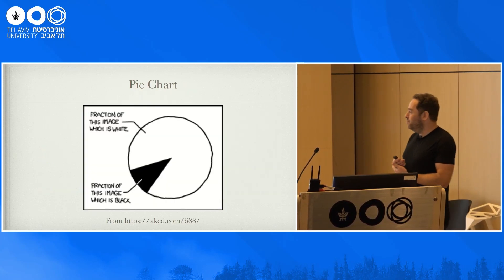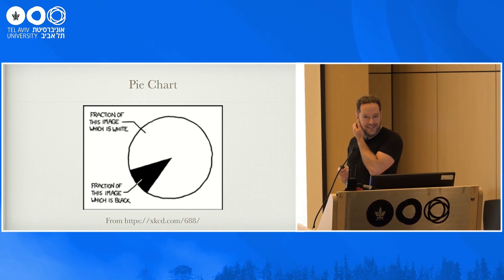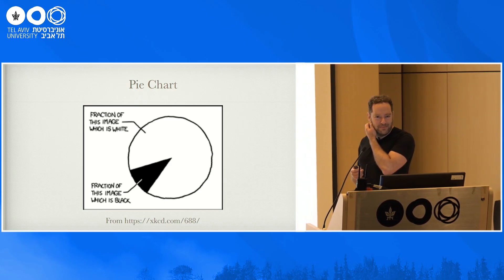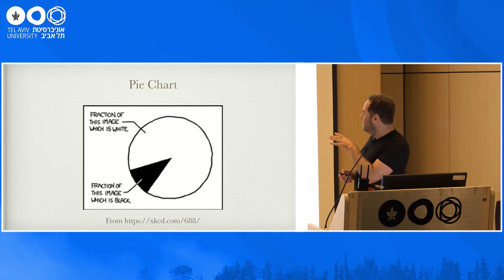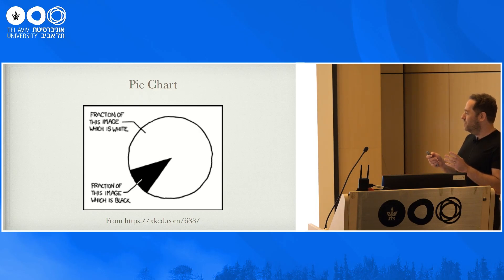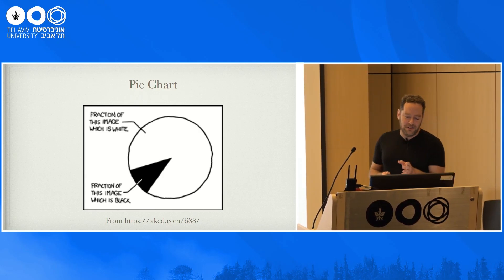For the first example, I took this famous pie chart from XKCD, which is a self-describing pie chart. It shows the percentage of the pie chart that is black and the percentage that is white. Now this is kind of a hand-drawn style image. As far as I know, no one has made a TikZ plot of it, so I hope this was not in the training set of any of the LLMs. And I wanted to recreate this image in TikZ.